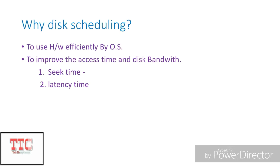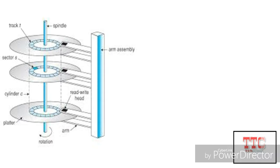To understand the seek time, latency time and disk bandwidth, look at this diagram. This is a general disk structure. As we know, magnetic disks provide a bulk of secondary storage for a computer system.